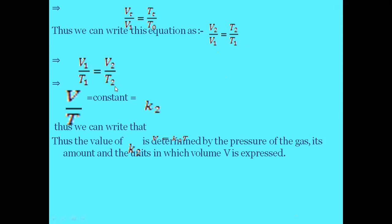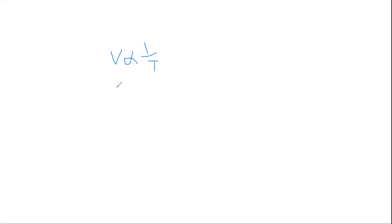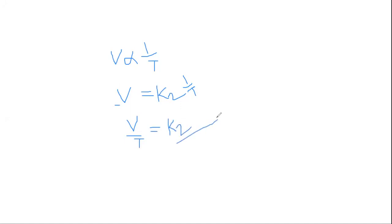From this we can say that volume is directly proportional to temperature. Replacing the proportionality sign with constant k2 — Charles' proportionality constant — we write V equals k2 times T, or equivalently V/T equals k2. Charles stated that volume is directly proportional to temperature, and V/T equals the constant k2.